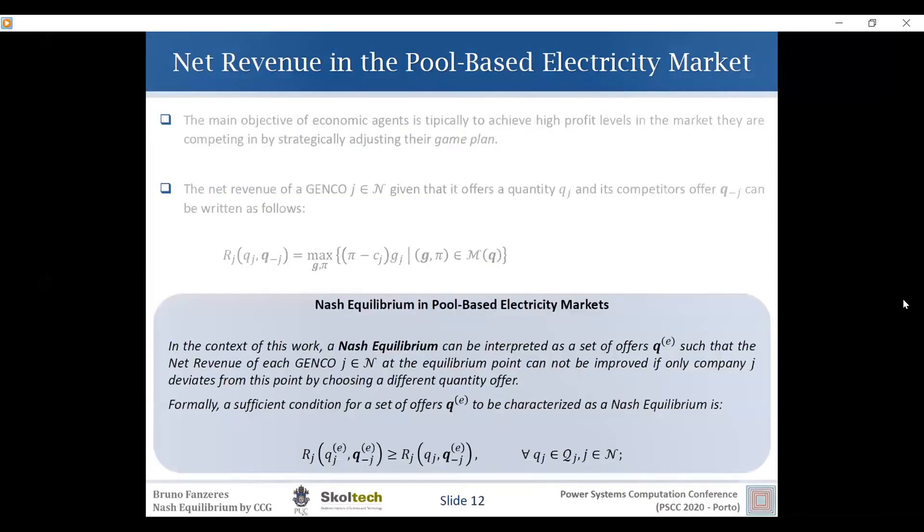So the idea of Nash Equilibrio is quite simple in this context, because it basically is a set of offers QE in which the net revenue at this point is greater than the net revenue of all possible offers of Generation J, if its competitors offer the equilibrium. So the idea is that a single competitor cannot improve its profit or its net revenue by unilaterally deviating from the equilibrium. And of course, this expression must be valid for all market participants since it's in equilibrium, general equilibrium.